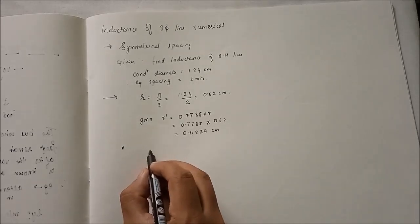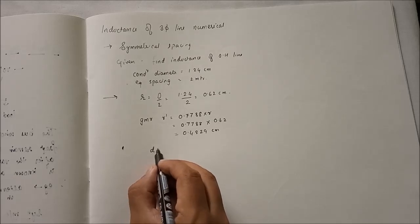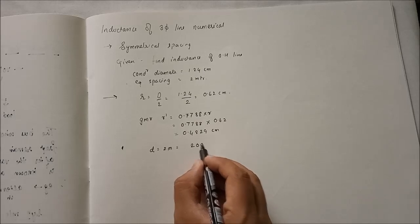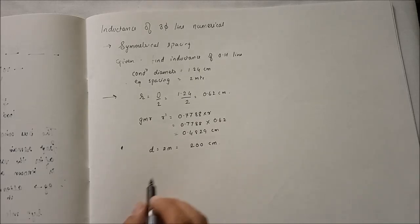Now conductor spacing is given. Distance is equal to 2 meter. We have to convert to centimeter, which is equal to 200 cm.